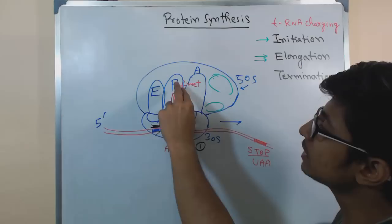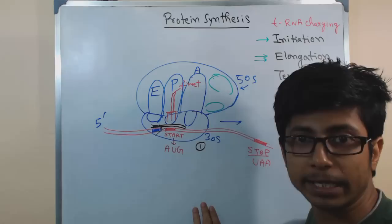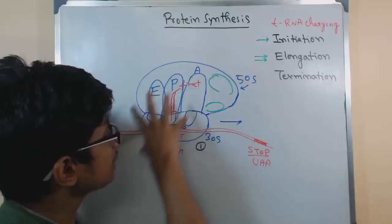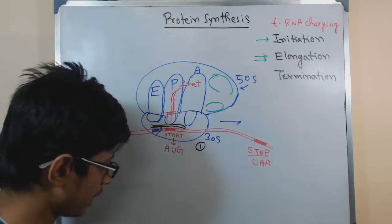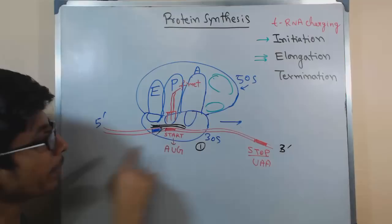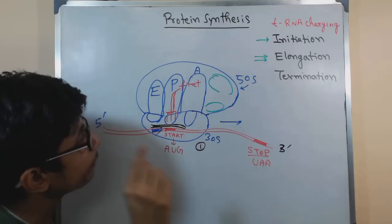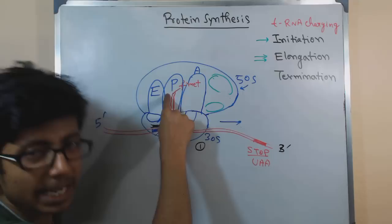The amino acid present on the previous tRNA will be transferred to the new tRNA. After that, the third stage is that the ribosome will slide along one codon, or three nucleotides, from 5 prime towards 3 prime. As a result, whatever tRNA is present at the E site will fall off, whatever tRNA is at the P site will now move to E, and whatever tRNA is at the A site will now move to P.